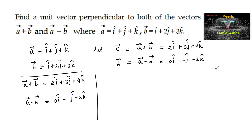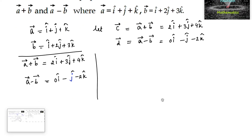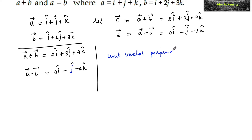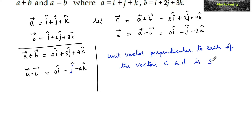Now we need to find the unit vector perpendicular to both c and d. The unit vector perpendicular to each of the vectors c and d is given by plus or minus c cross d divided by the magnitude of c cross d. So now let us find c cross d.